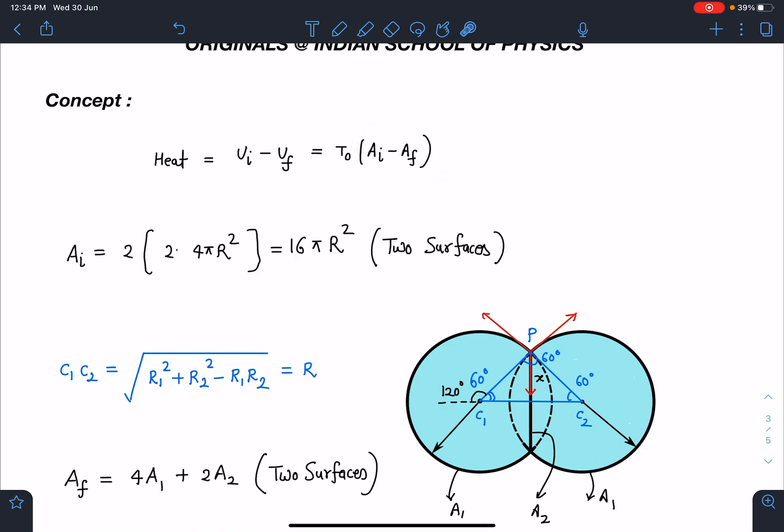A_initial is the initial surface area and A_final is the final surface area. A_initial is very easy to calculate since we are dealing with soap bubbles, so there are two interfaces inside and outside.